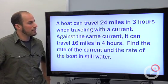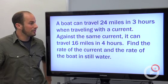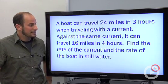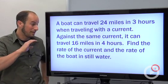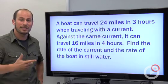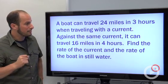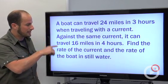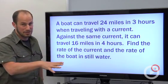Our situation is that a boat travels 24 miles in 3 hours with the current, and against the same current it can travel 16 miles in 4 hours. We're supposed to find the rate of the boat and the current in still water. So the main things I want to take with me are 24 miles in 3 hours with the current, 16 miles in 4 hours against the current.